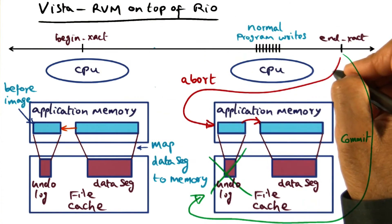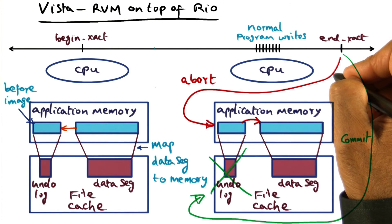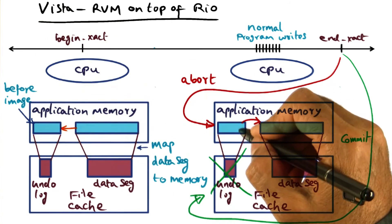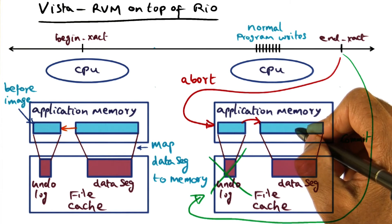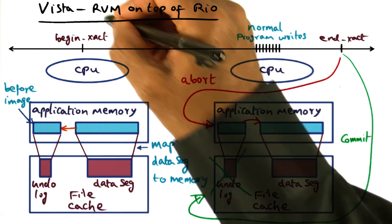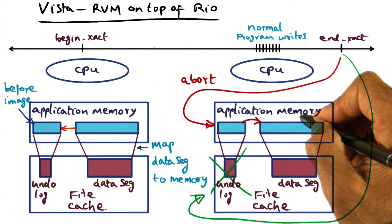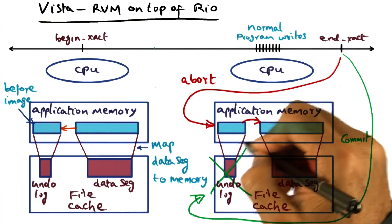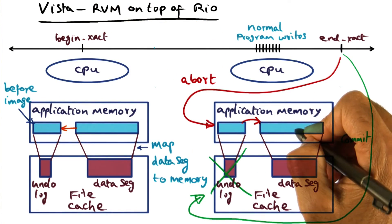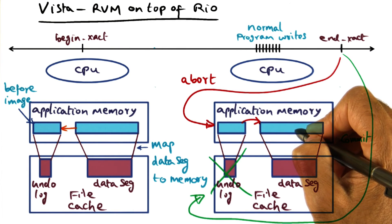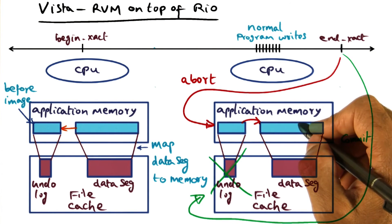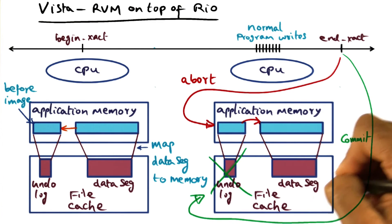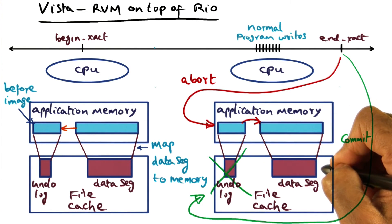On the other hand, if the transaction aborts, what needs to be done is to take the undo record created at the beginning of the transaction — the before image — and copy it back into the portion of virtual memory that was modified. That is the semantic of RVM: if the transaction aborts, we restore the virtual memory back to its original state before the beginning of the transaction. Once we copy the before image back into that portion of virtual memory, we can throw away the undo log. Restoring the before image into virtual memory also automatically corrects whatever changes were made to the data segment.